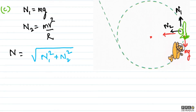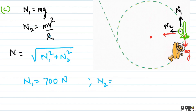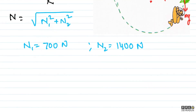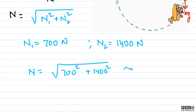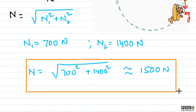Calculating: N1 equals mg equals 700 Newton, and N2 equals mv squared by r equals 1400 Newton. So the net normal reaction equals the square root of 700 squared plus 1400 squared, which comes out to approximately 1500 Newton. This is the answer to the third part.